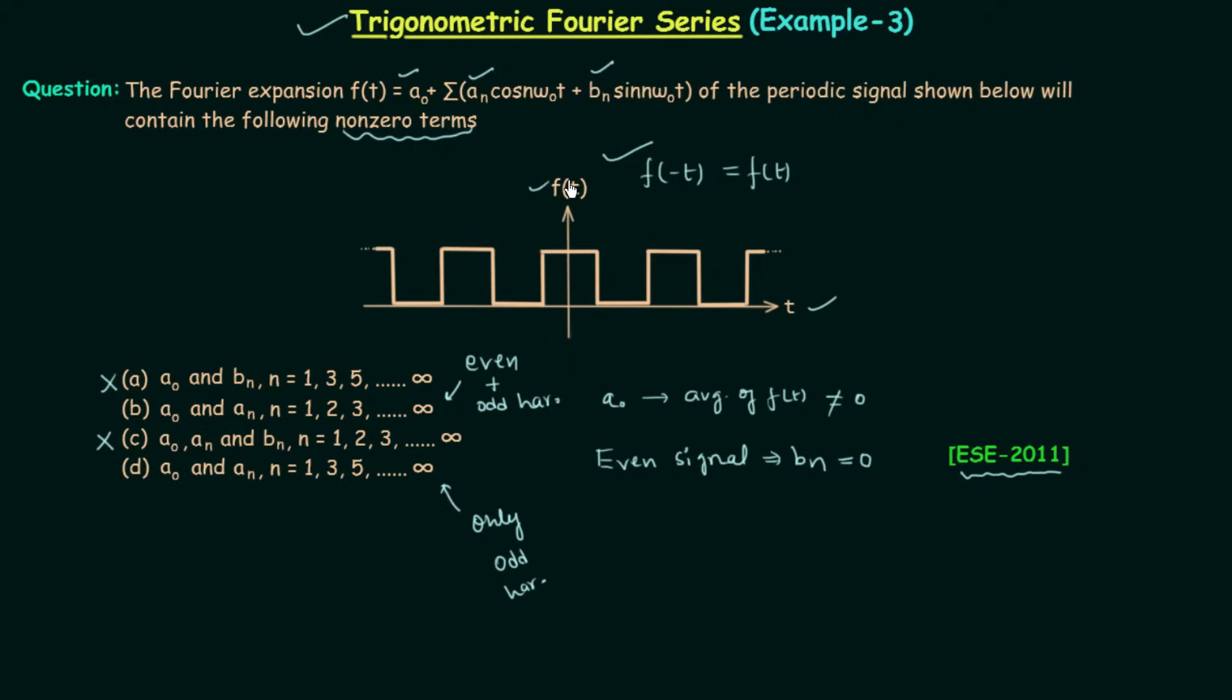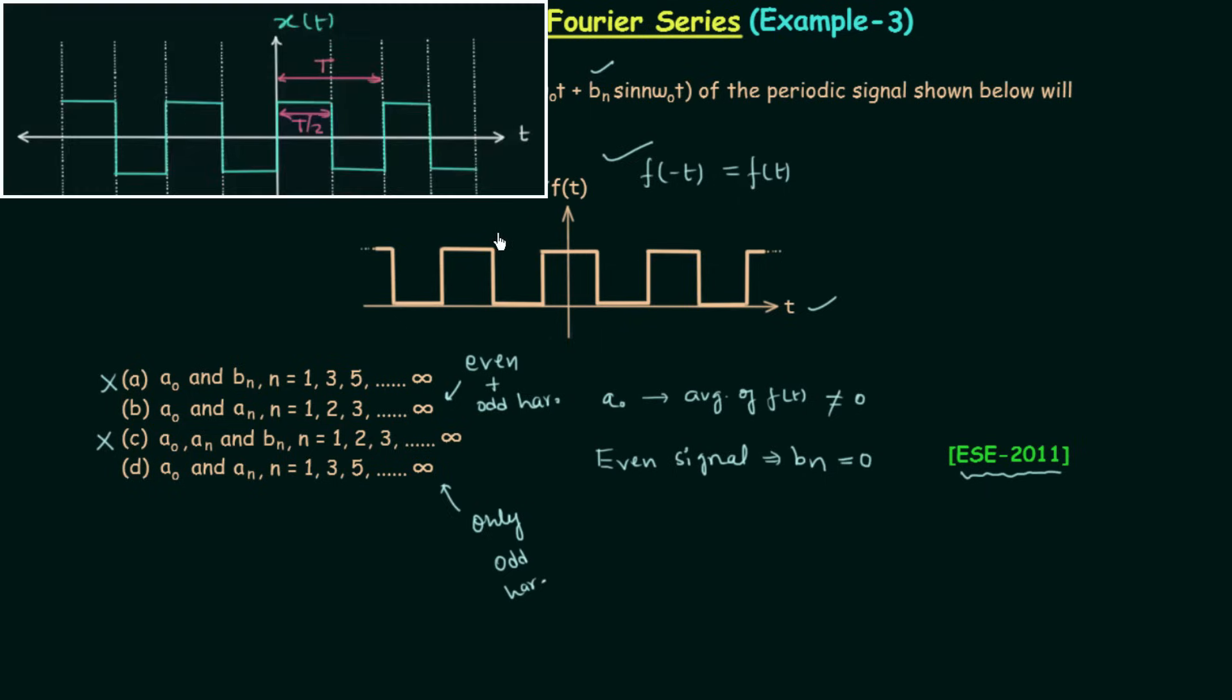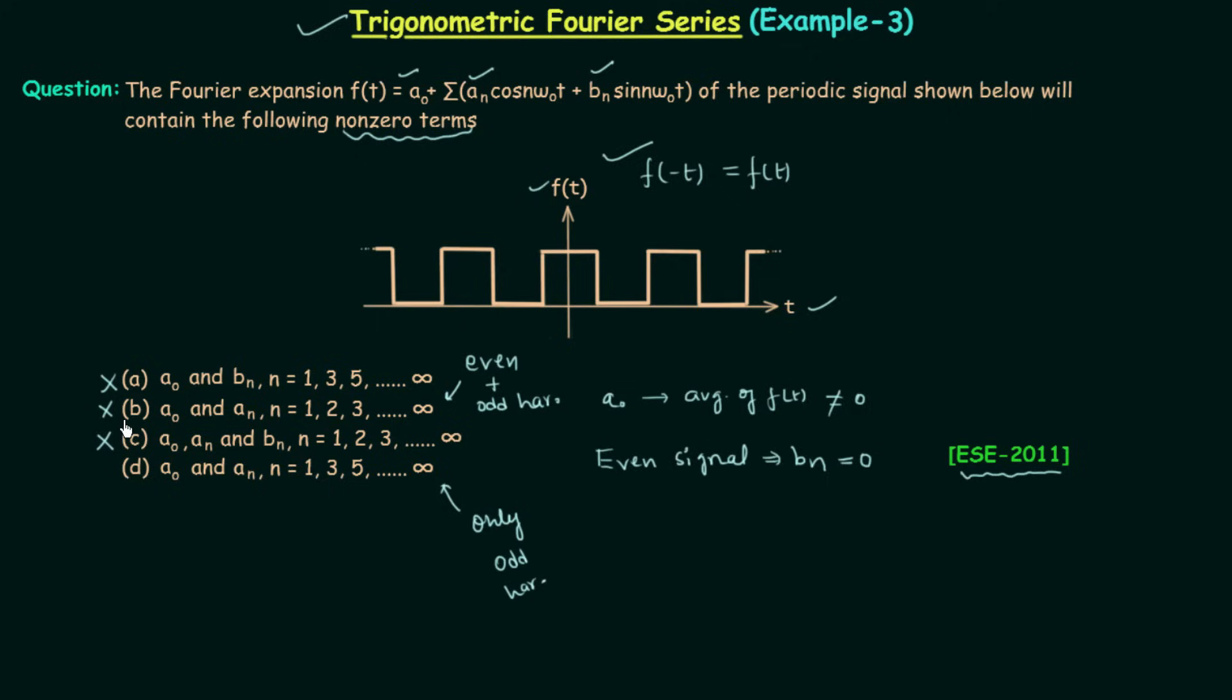The given signal ft is derived from the half wave symmetric signal which you can see on the top left corner of your screen. Therefore we can say that only odd harmonics will be present. So option b is an incorrect option and option d is the correct option because here n equal to 1, 3, 5 and so on. This means only odd harmonics are present because when you put n equal to 1, 3, 5 here you will find we have cos omega naught t, cos 3 omega naught t, cos 5 omega naught t which simply implies that we have odd harmonics.